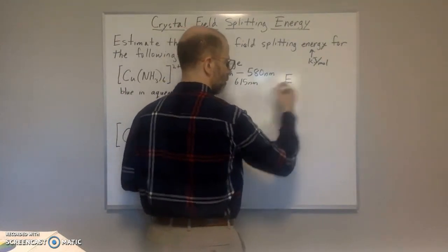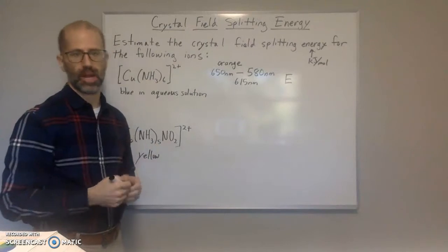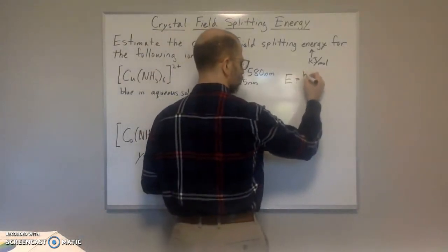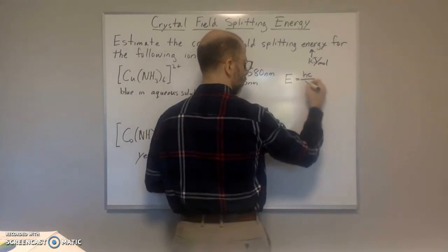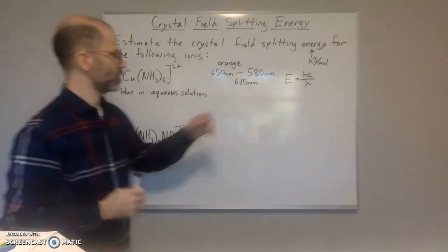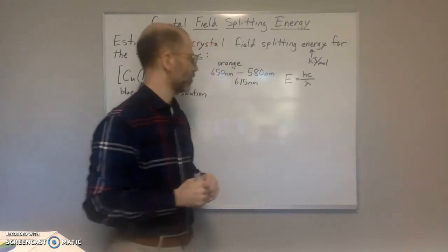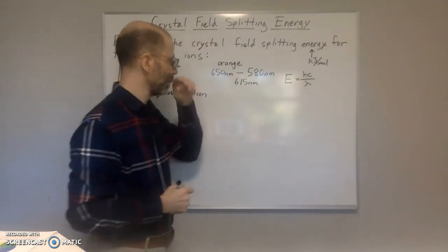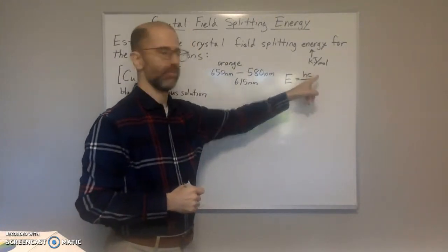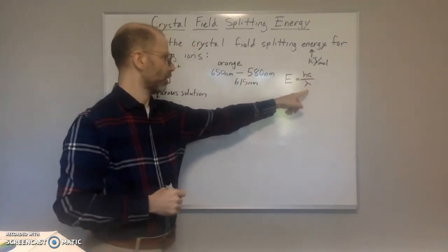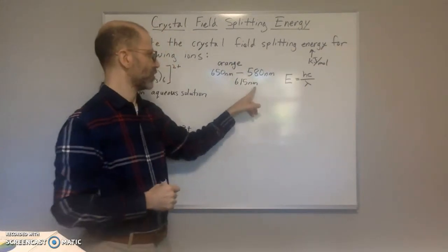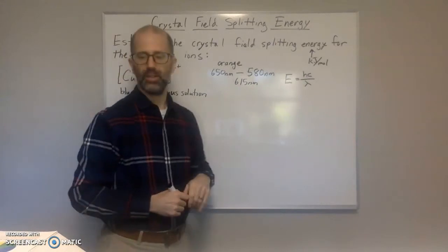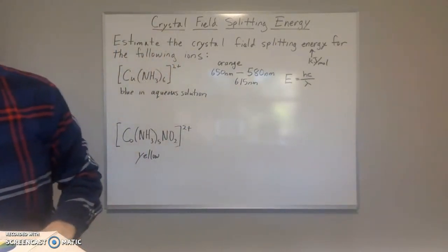So we're going to use the equation that you are familiar with from when we're trying to find the energy of a photon or energy of light. We use E = hc over lambda, right? So h is Planck's constant, 6.626 times 10 to the negative 34. And we have the speed of light and we have the wavelength — that's where we're going to put the wavelength. But we've got to change that to meters before we do that.